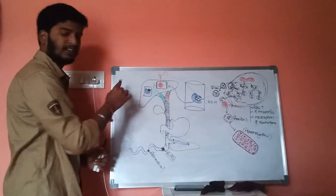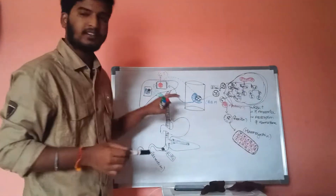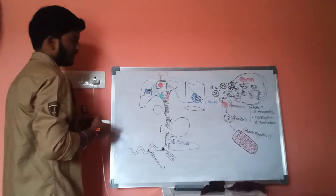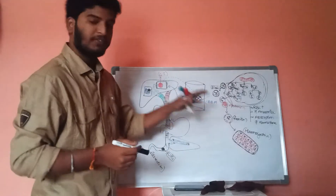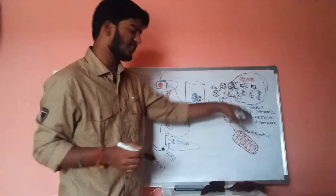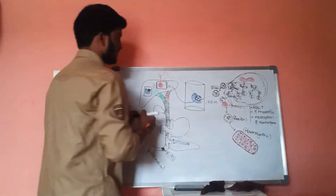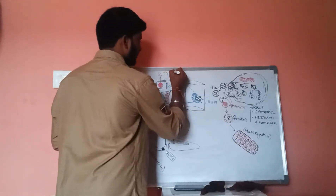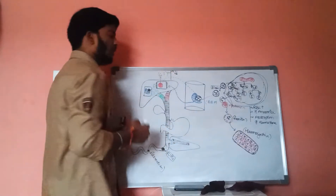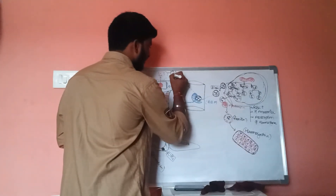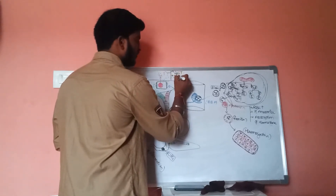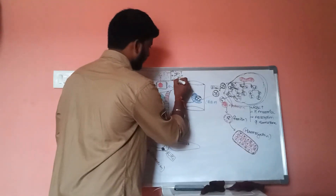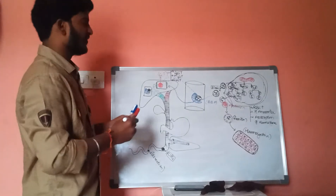Now, regarding the liver, there is one more condition — impairment in the glucuronyl transferase. It is converted into three categories: first is low decrease of glucuronyl transferase, second is moderate decrease of glucuronyl transferase, and third is severe decrease of glucuronyl transferase. These are the three conditions which result in hyperbilirubinemia.